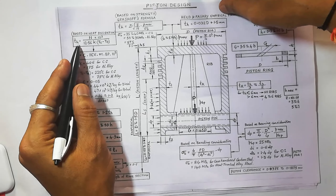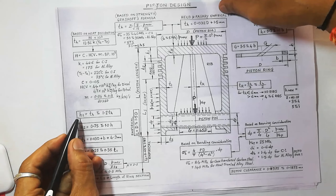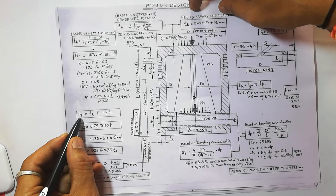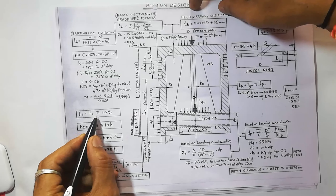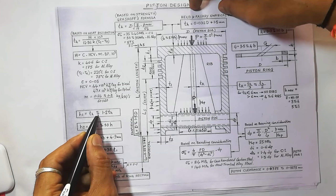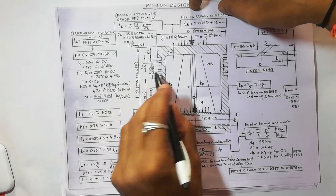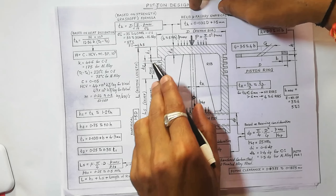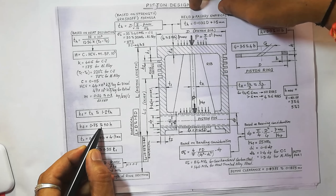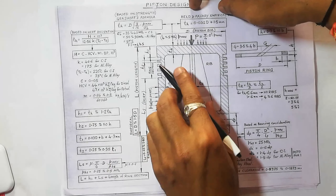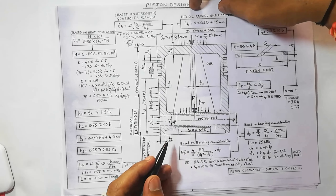Once we calculate the thickness of the head, we calculate other parameters from it. h1 is the outer thickness, in the range of TH to 1.2 TH. h2 is the thickness of the ring section, in the range 0.75 to 1.0 times the diameter. In the piston we use 2 to 5 rings depending on the application.